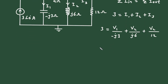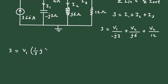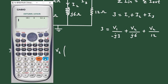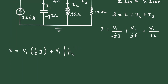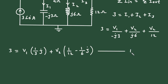Now let us simplify this. It will be 3 = V1·(1/(−j3)) + V2·(1/(j6) + 1/12). Simplifying: 3 = V1·(1/(3j)) + V2·(1/12 − 1/(6j)). Let us call this Equation 1.